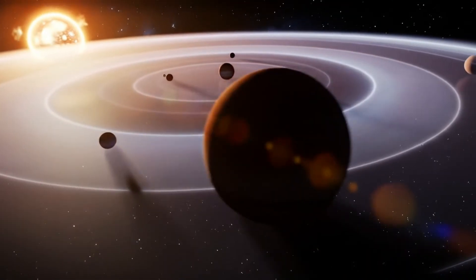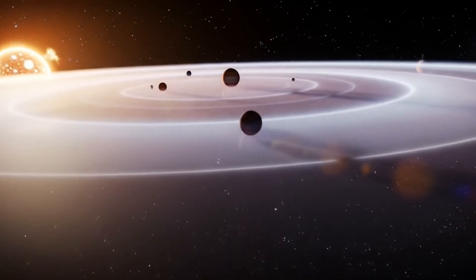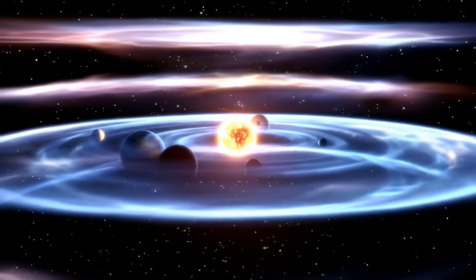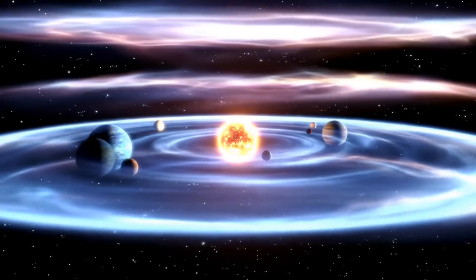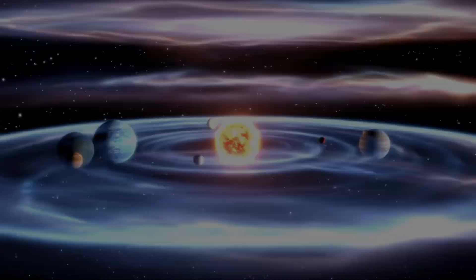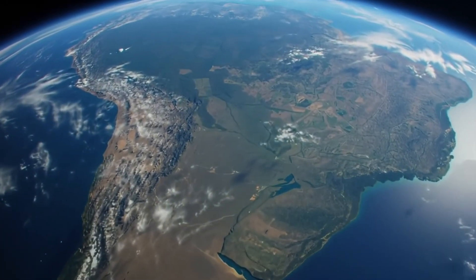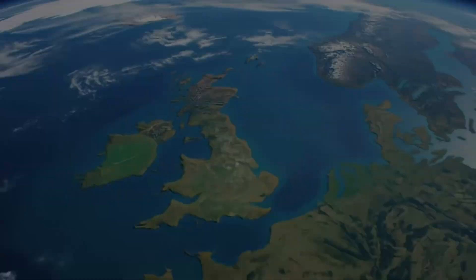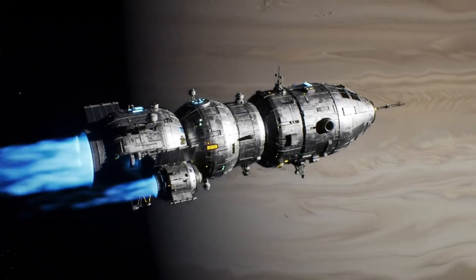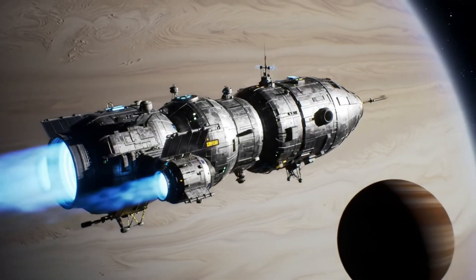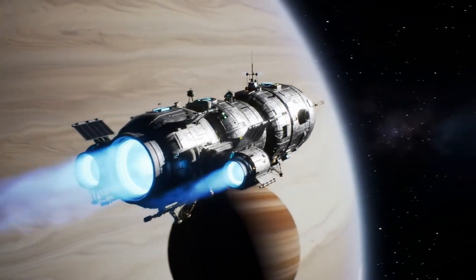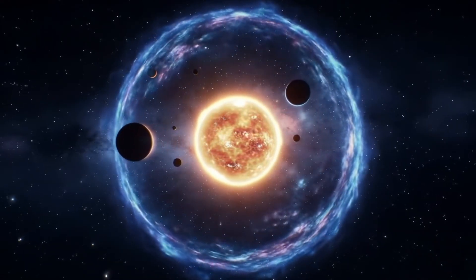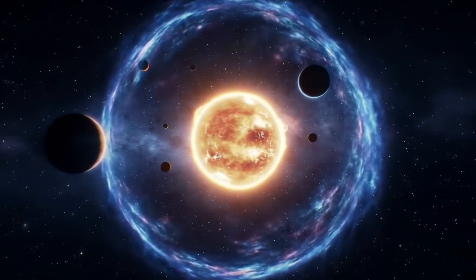First stop, the heliosphere. This is like a giant bubble that wraps around the entire solar system, created by the sun's solar wind, a stream of charged particles shooting out in all directions. According to NASA, this bubble stretches about 120 astronomical units, way past Pluto. Above and below the ecliptic, the heliosphere forms a kind of shield, protecting us from the harsh radiation and particles floating in interstellar space.